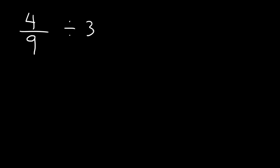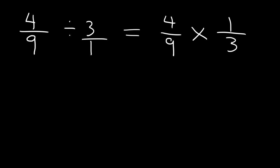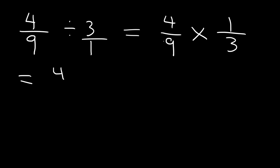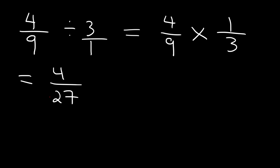The first thing you could do is convert the whole number into a fraction. 3 is the same as 3 over 1. And then you can use the keep-change-flip principle: keep the first fraction the same, change division to multiplication, and then flip the second fraction. Now multiply across: 4 times 1 is 4, and 9 times 3 is 27. So the answer is 4 over 27.